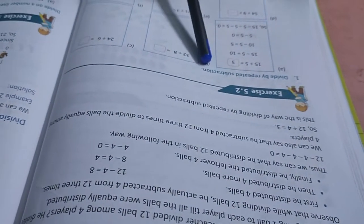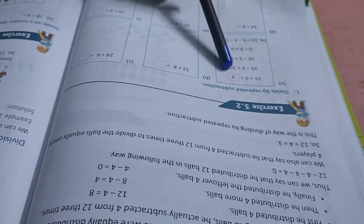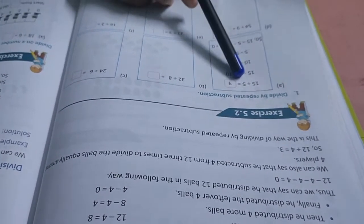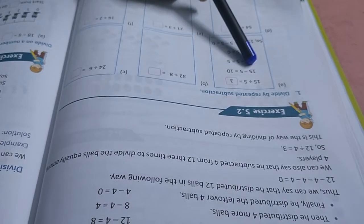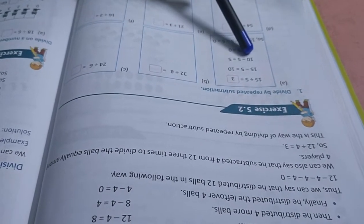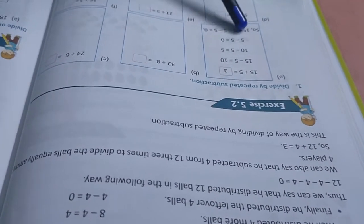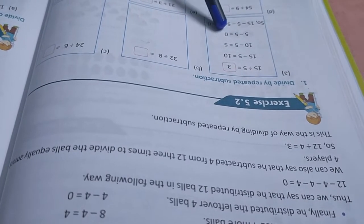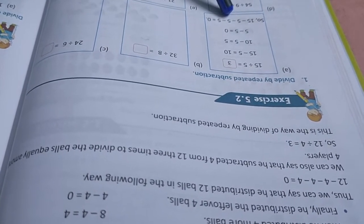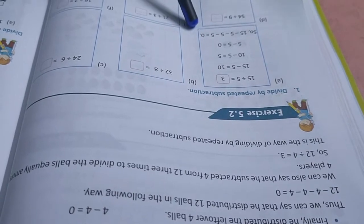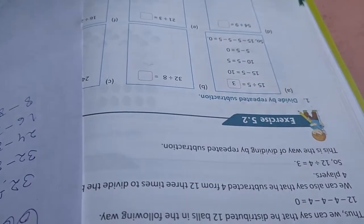Now go to 5.2, divide by repeated subtraction. 15 divided by 3. 5 threes are 15. So 15 minus 5 is 10, 10 minus 5, 5 minus 5, 0. So this 3 times 5 comes here and write it in that way. In this way you complete it.